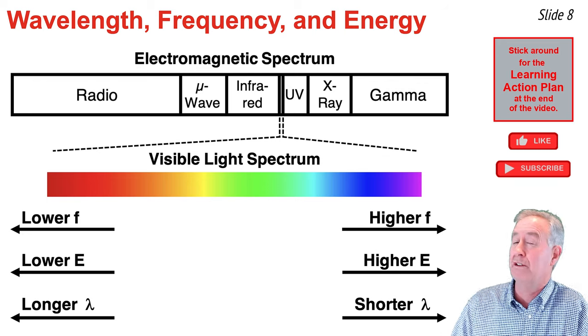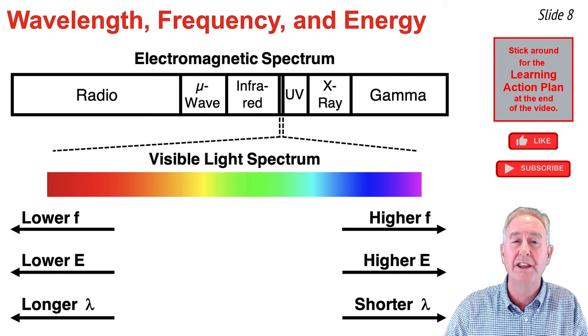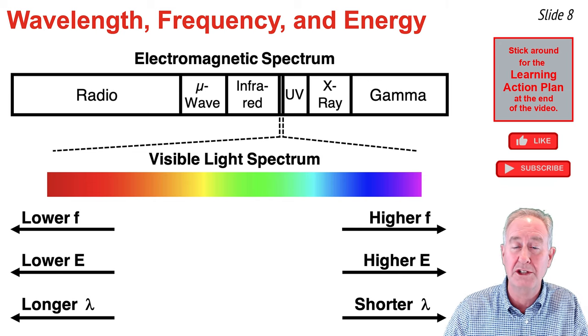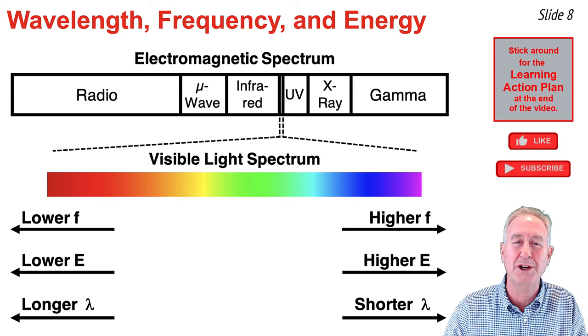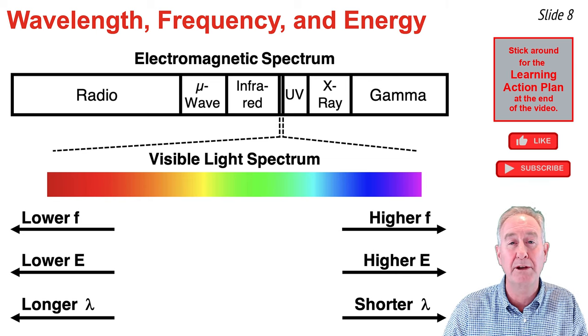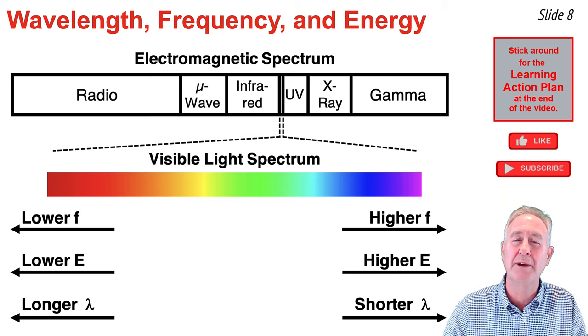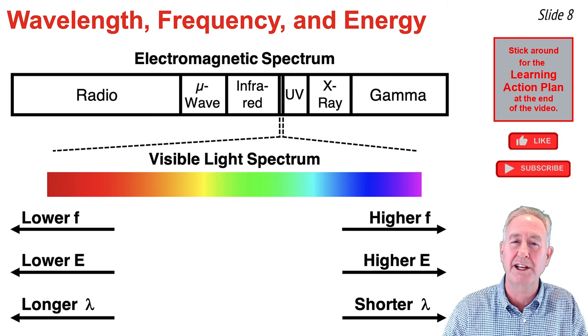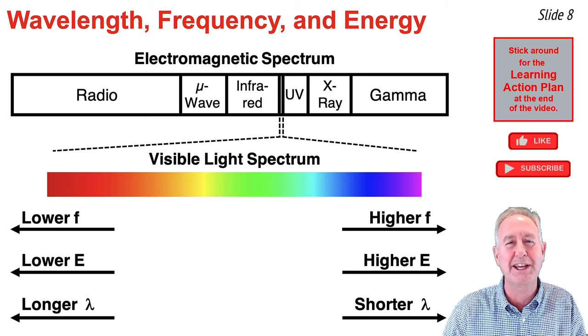The red waves of the visible light region have the longest wavelength and the lowest frequency and energy. As you progress from red over to violet, you would observe that the frequencies and energies are increasing and the wavelengths are decreasing. So the violet waves of the ROYGBIV or visible light spectrum have the shortest wavelengths and the highest frequencies and energies.